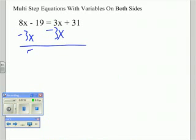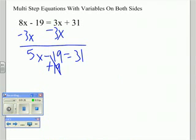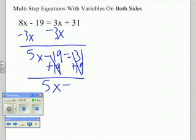Now your equation is 5x minus 19 equals 31. Now add 19 to both sides to get 5x equals 50.